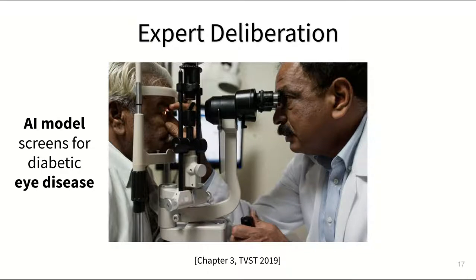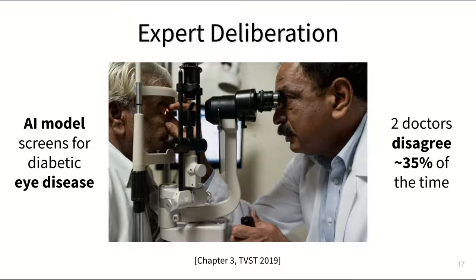How is it diagnosed? You take a photo of a patient's eye and you show it to an eye doctor. Unfortunately, if you show the same photo to two different doctors, there is roughly a 35% chance that they'll disagree on the diagnosis. And there's really no other objective method to tell which doctor is right and which is wrong.